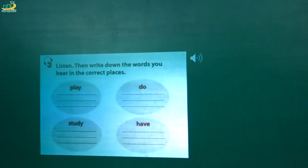Unit 1 Page 14 Looking Back Activity 3. Listen, then write down the words you hear in the correct places. Play music. Do homework. Study new words. Have a new book. Do morning exercise. Play badminton. Have English lessons. Study geography. Play sports.